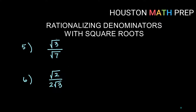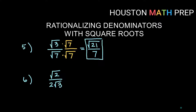For number five, we have a root on the top and the bottom. Remember, always multiply by whatever root is in the denominator to rationalize it. To get rid of the root on the bottom I need to multiply by root seven on both pieces. These are inside numbers, so the multiplication happens under the root — we get three times seven, giving root 21 on the top. Root seven times root seven gives us seven. This cannot be simplified further, so the answer is square root 21 over seven.